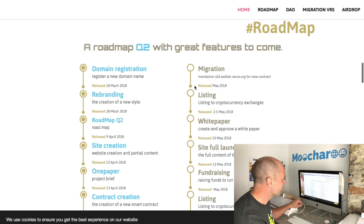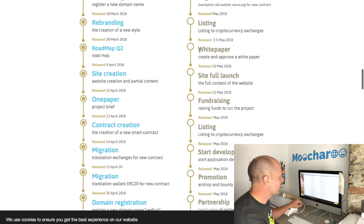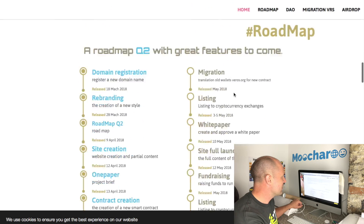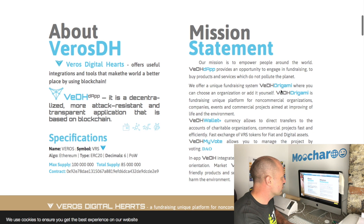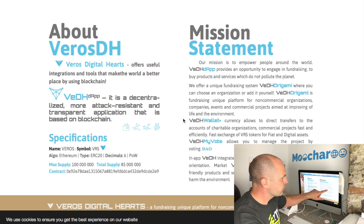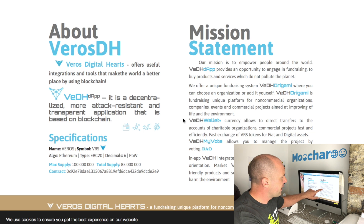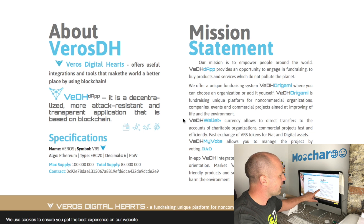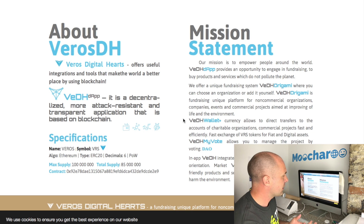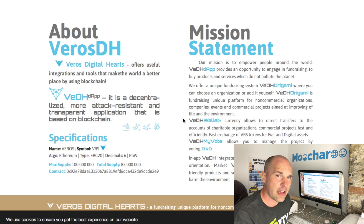Looking at their website, they've recently renewed it. On the roadmap, there are some 'important' dates - domain registration on the 18th of March, a rebranding, and on the 9th of April they released their roadmap. Very important milestones include site creation, adding some partial content, and creating a 'one paper' - it's just talk of their migration and another domain registration which takes about five minutes. Their white paper is still to come. Their mission statement says Veros Digital Heart Origami is a fundraising platform for non-commercial organizations, companies - which are commercial - events, and commercial projects, aimed at improving life and the environment.